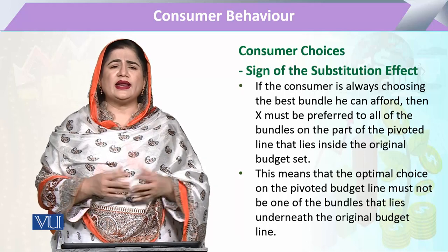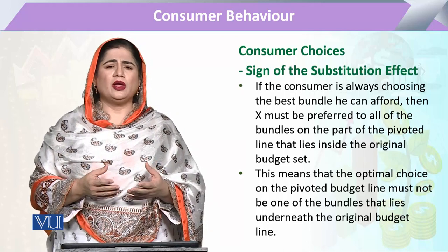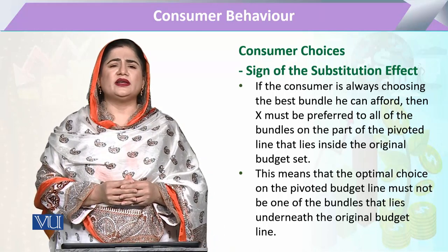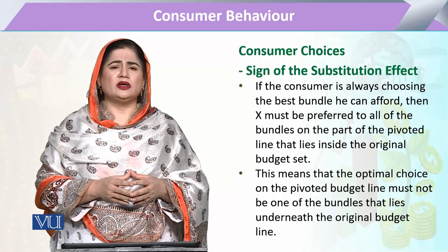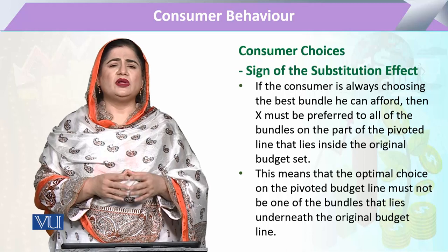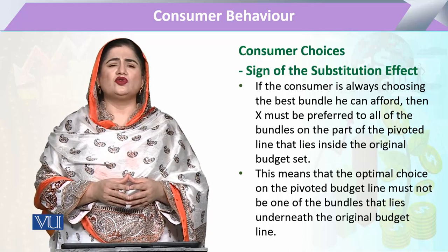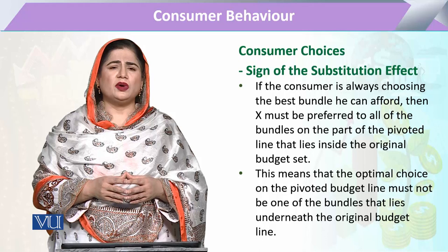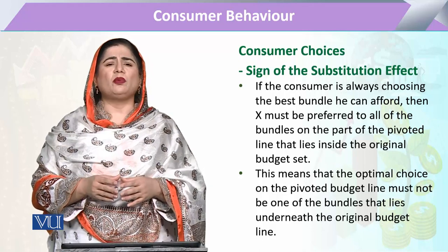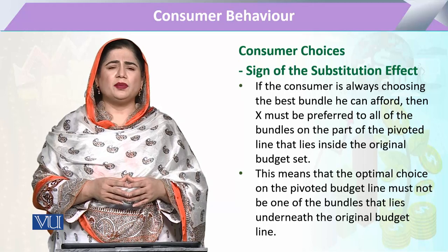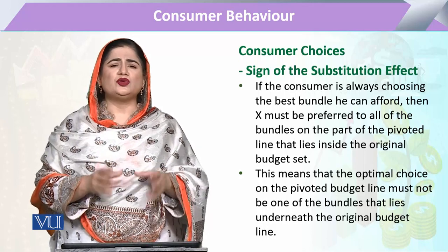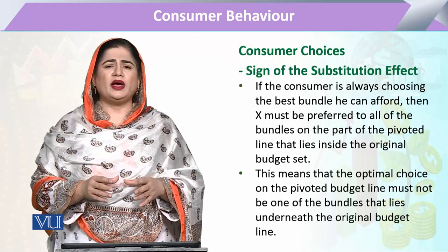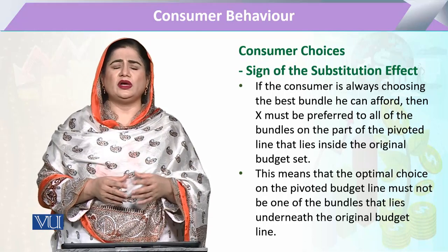The consumer is always selecting the best bundle. Whether he is considering bundle 1, 2, 3, or any type of bundle, he has the tendency to choose his optimal choice from the available resources. The consumer will always select the best available choice. So if the consumer is now shifting his optimal bundle compared to the previous one, that new bundle should be at least as good — as utility-maximizing — as the previous one.